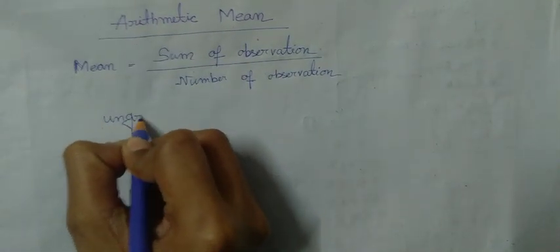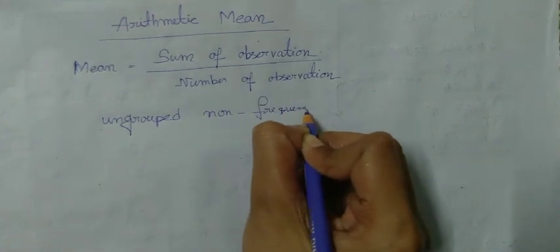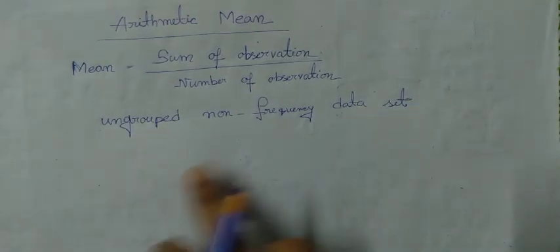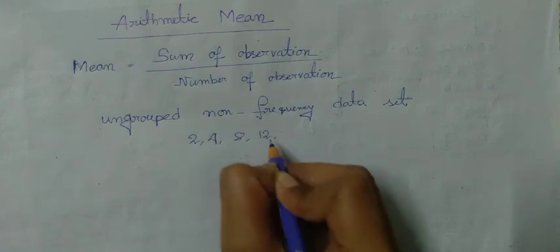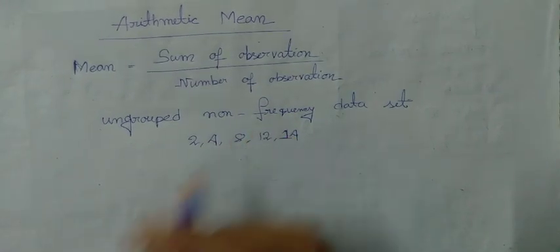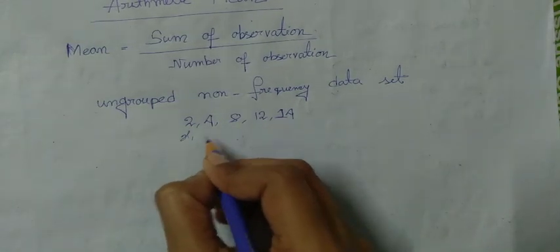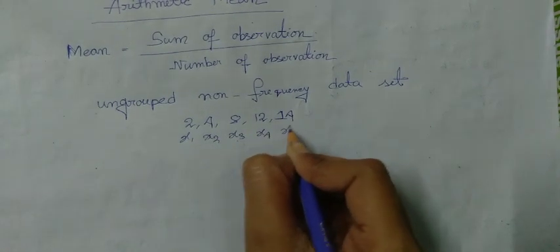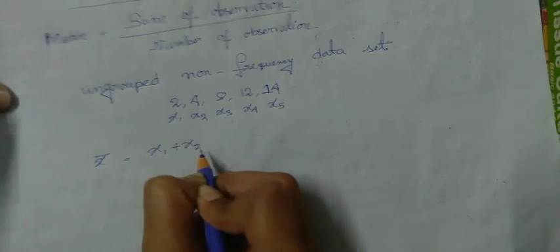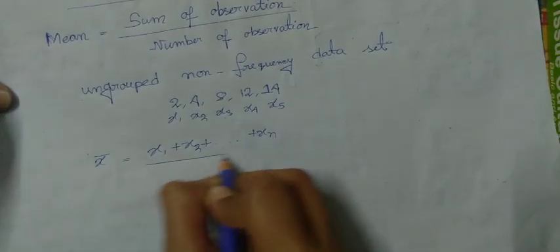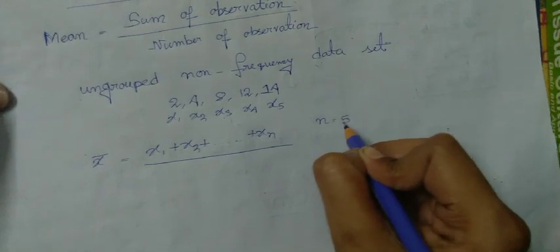Ungrouped non frequency data set means a random number of data set like 2, 4, 8, 12, 14 and the mean value of this data set. If we consider this number as x1, x2, x3, x4, x5, so the mean formula or formula of mean is x bar is equal to x1 plus x2 plus so on xn by number of observation. Here number of observation is 1, 2, 3, 4, 5 so n is equal to 5, by n.